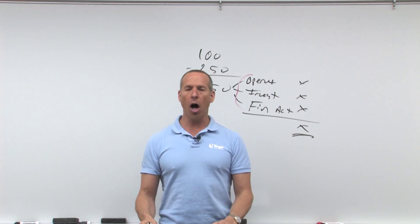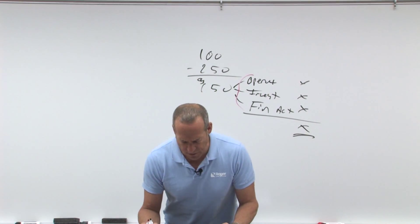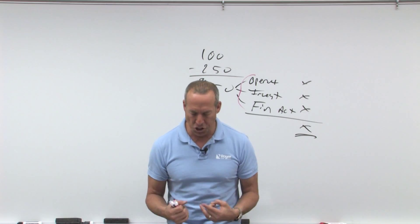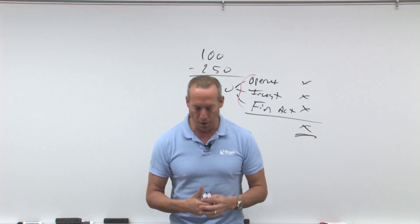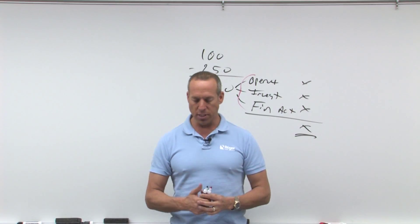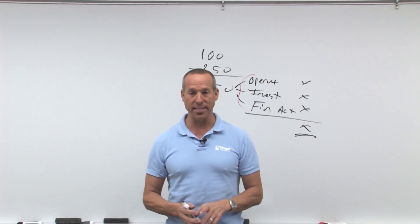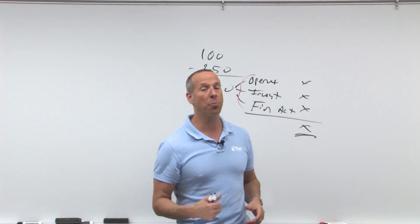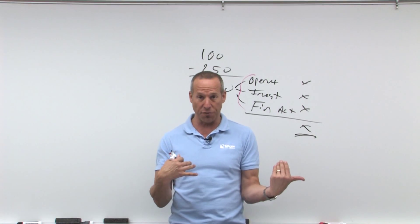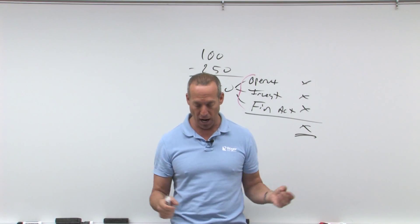As I said, we have operating activities. What are operating activities? Inflows and outflows related to production of income from continuing operations. So it says all transactions that are not investing or financing are operating. So everything kind of falls into this category if it's not investing or financing, which are very carefully defined.